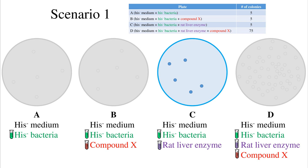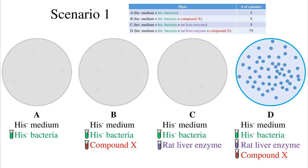On plate D, the 75 colonies seen in the presence of rat liver enzymes plus the compound indicates that after the compound is metabolized by liver enzymes, a metabolite is formed that does have mutagenic properties. The rate of reverse mutation is much greater when the compound is metabolized. These results indicate that the compound is pro-mutagenic — the parent form is non-mutagenic (compare plates A and B), but once metabolized by the liver it becomes activated and is mutagenic, causing a greater rate of reverse mutation compared to the spontaneous rate.